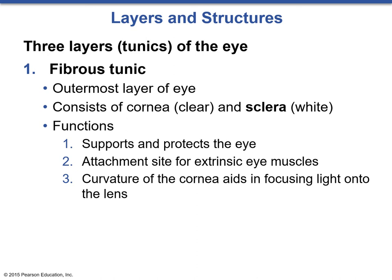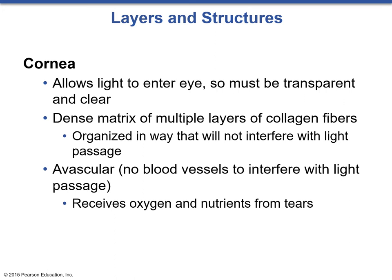The cornea is a fascinating structure. It is a clear, transparent layer with a dense matrix of multiple layers of collagen fibers, organized in such a way that they don't interfere with light passage. The cornea itself is an avascular structure — there are no blood vessels to interfere with light passage. If there were actually blood vessels in the cornea, we'd be looking through a web of blood every time we look at something. Because it is avascular, it receives oxygen and nutrients from tears, which is why we generate tears throughout the day.